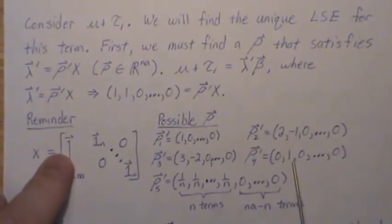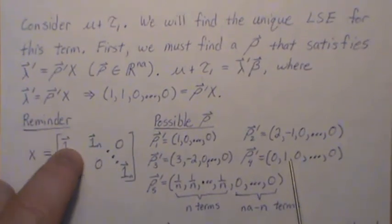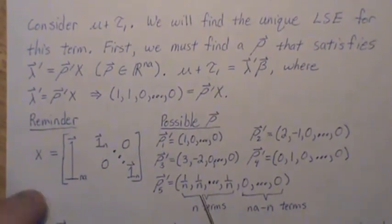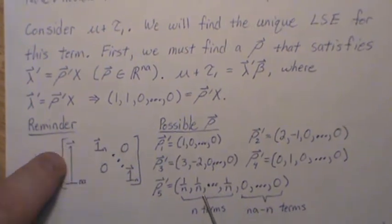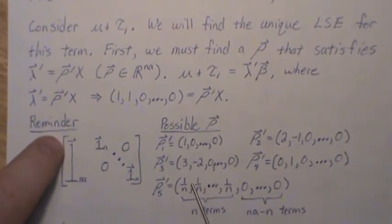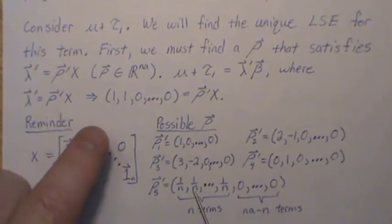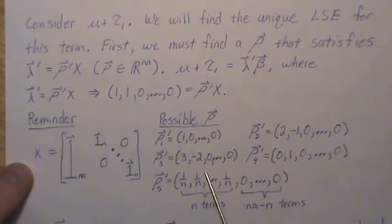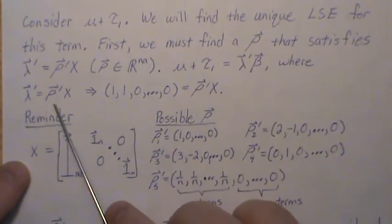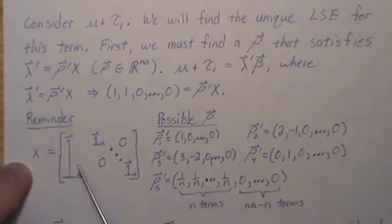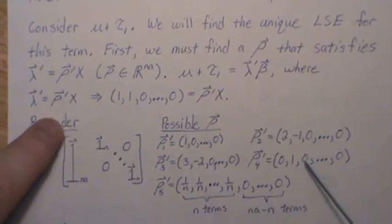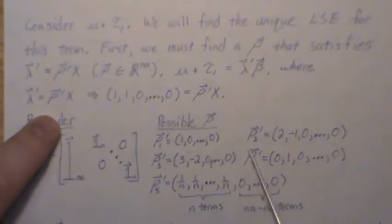Row 3 would satisfy it. Row 4 says just take the second row, which is 1, 1, the rest 0s. Or we could take the average of the first n rows, and that would be 1, 1s, and the rest 0s. There's an infinite number of rows that make this relationship possible. This is a requirement if you go back and review the mini-series on estimability.